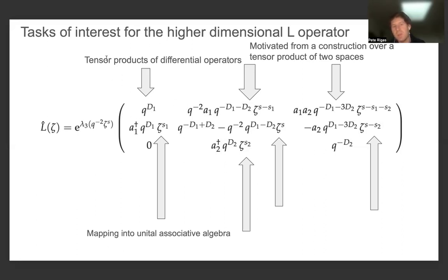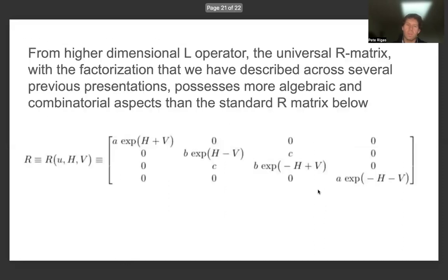We have a tensor product of differential operators motivated from the construction of the tensor product of two spaces, and the 'she' term is a complex-valued function — a complex-valued mapping into a unital associative algebra. From the higher-dimensional L operator, the universal R matrix with the factorization described into four components possesses more algebraic and combinatorial aspects than the standard R matrix.